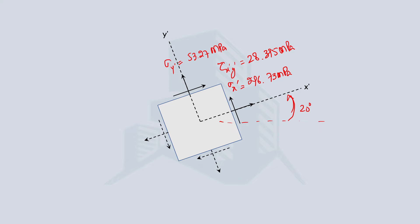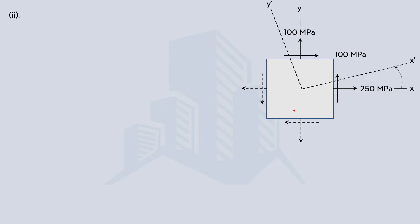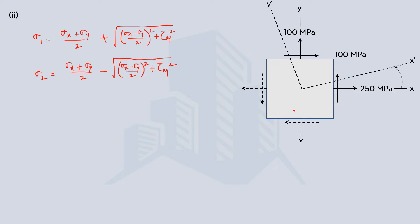The next thing being asked is to find the principal stresses. Recalling the formulas from the previous videos, this is the formula for the maximum principal stress and this is the formula for the minimum principal stress — also called the major and minor principal stress. By putting in the values of sigma x, sigma y, and tau xy, we get sigma 1, the major principal stress, as 300 MPa and sigma 2, the minor principal stress, as 50 MPa.